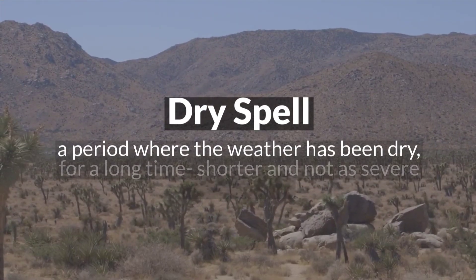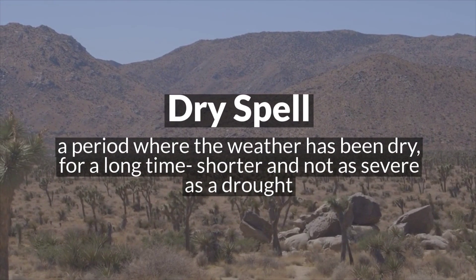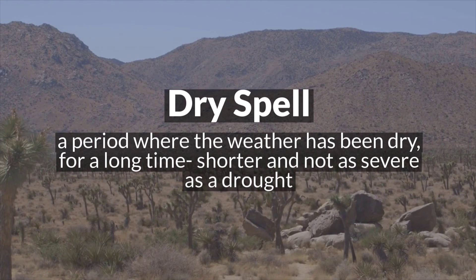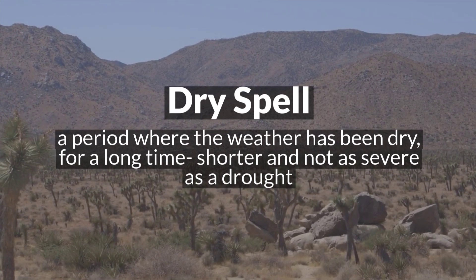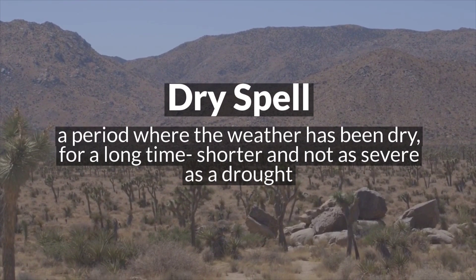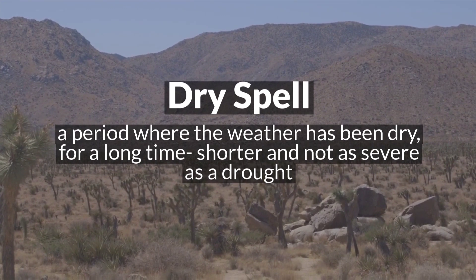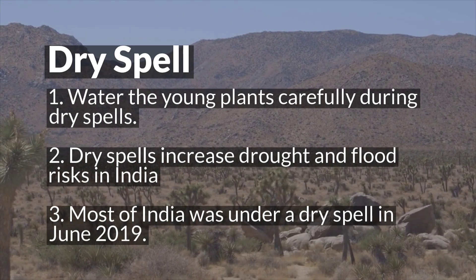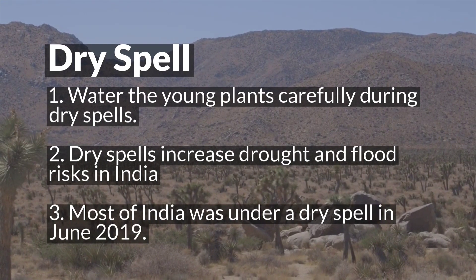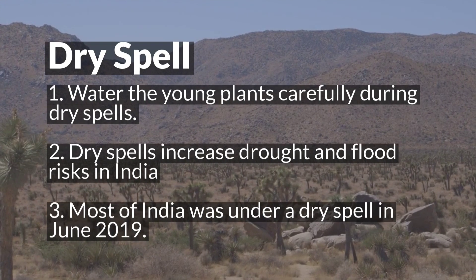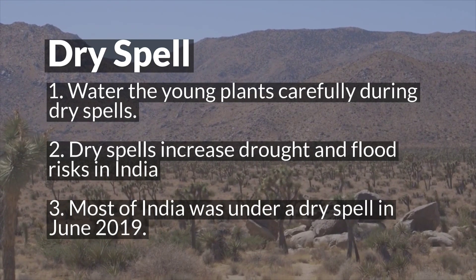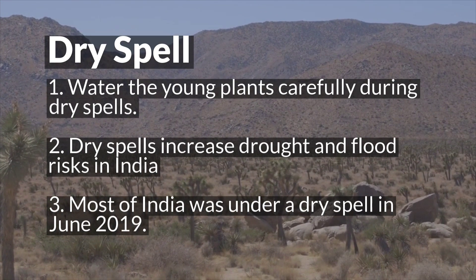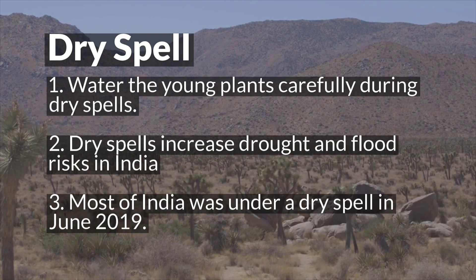Dry spell. A dry spell is a period where the weather has been dry for a long time, but it is shorter and not as severe as a drought. 'Water the young plants carefully during dry spells.' 'Dry spells increase drought and flood risks in India.' 'Most of India was under a dry spell in June 2019.'